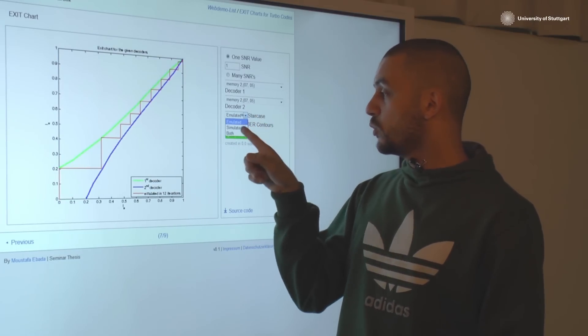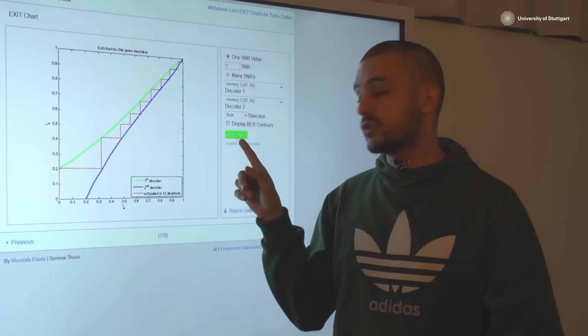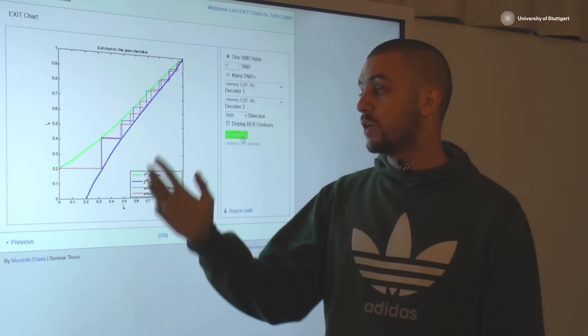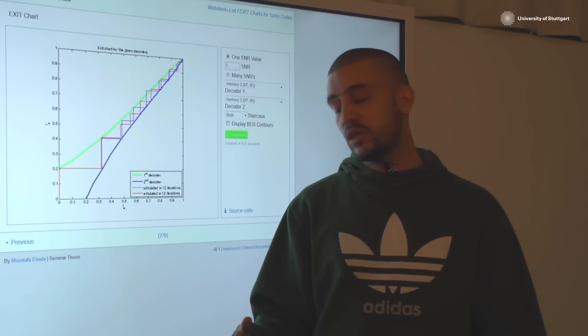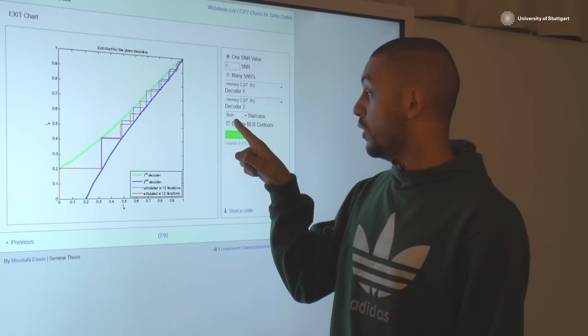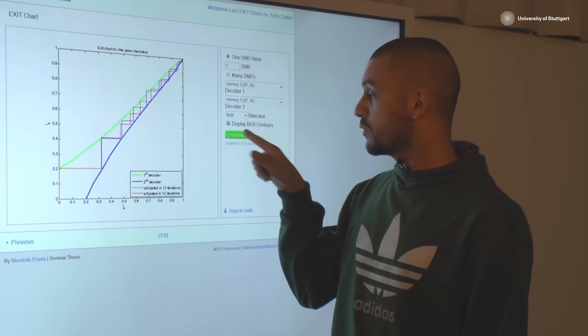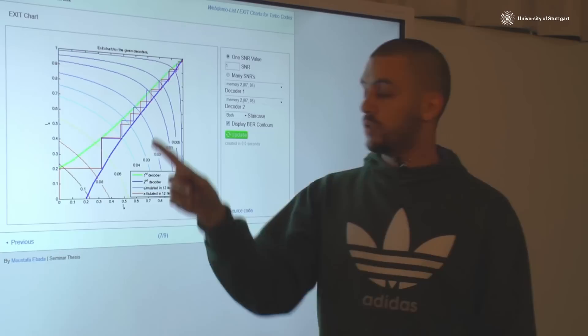Also you could just view both emulated and simulated, and you just update it. So here you have both simulated and emulated behaviors. Also you have the option to display bit error rate contours. So here you have the bit error rate contours.